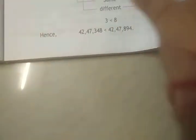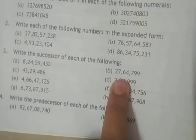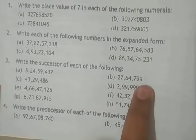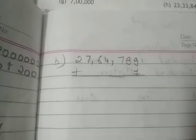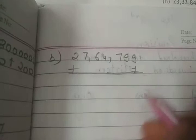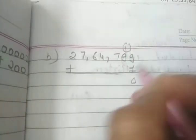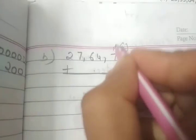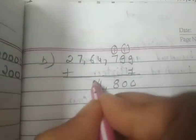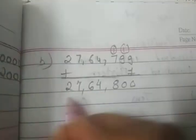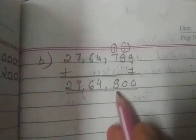Next, B is 27,64,799. In successor, we add plus 1. 9 plus 1 is 10, carry 1. 9 plus 1 is 10, carry 1. 7 plus 1 is 8. The successor is 27,64,800.